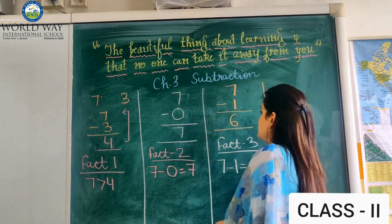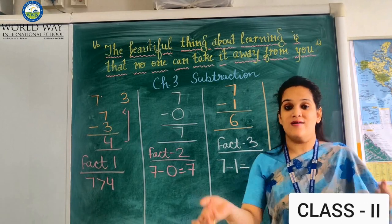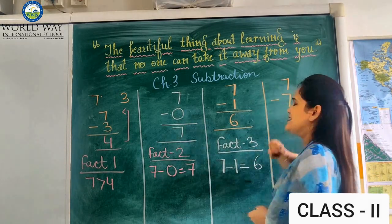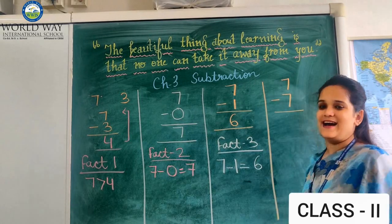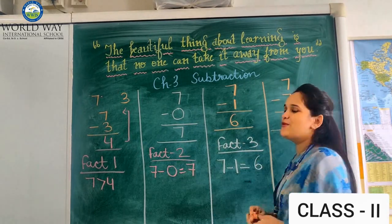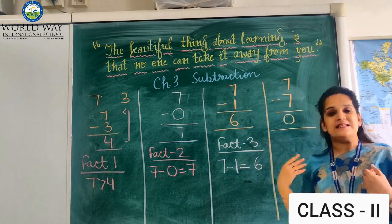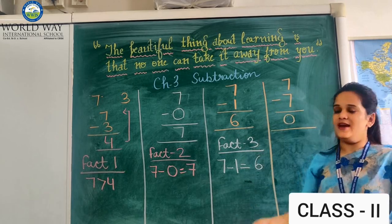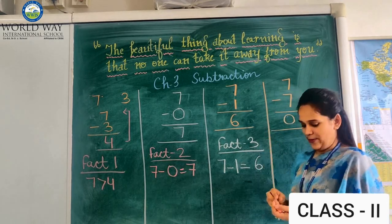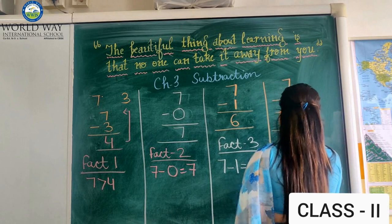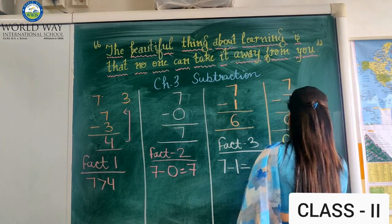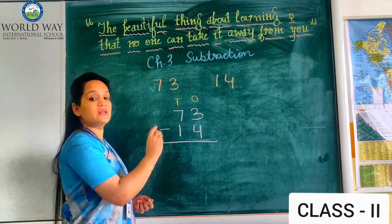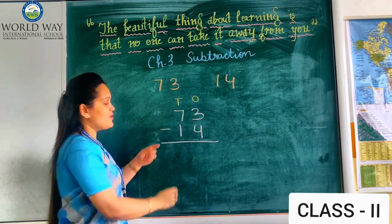Now fact number 4: if you will remove any number from itself — if you will remove 7 from 7 itself — what will be the answer? The answer will be 0, the difference will be 0. If you subtract a number from itself, you will get the difference 0. So this is our fact number 4.